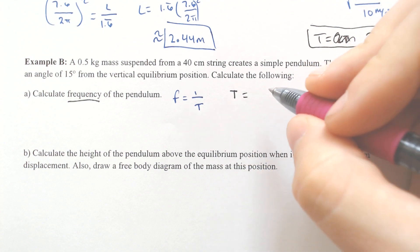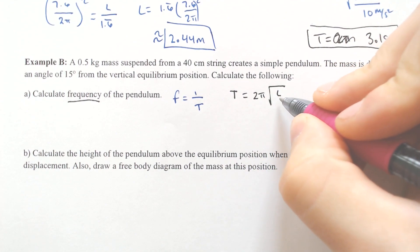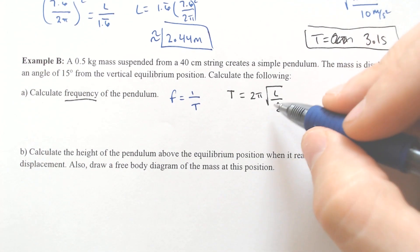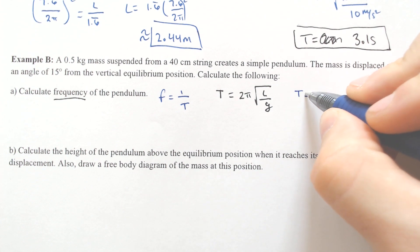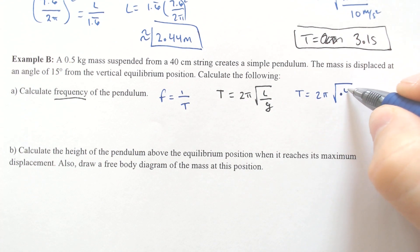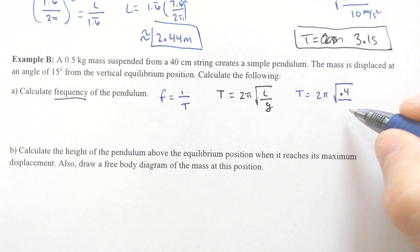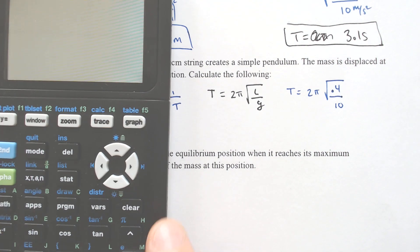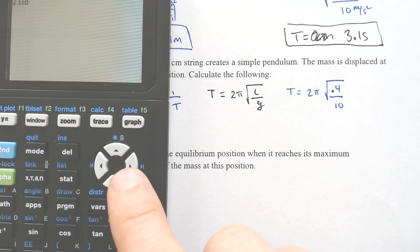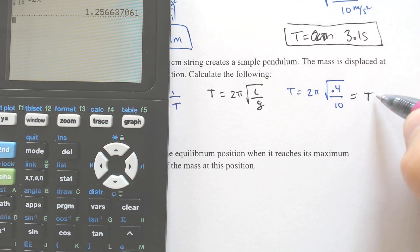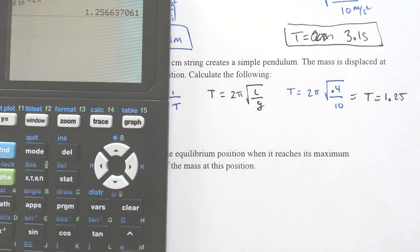The period equals 2π times the square root of L divided by G. Do we know L? 40 centimeters — so L is 0.4 meters. And we know G. So T equals 2π times the square root of 0.4 over 10. If we do that calculation, we end up with a period of 1.25 seconds.